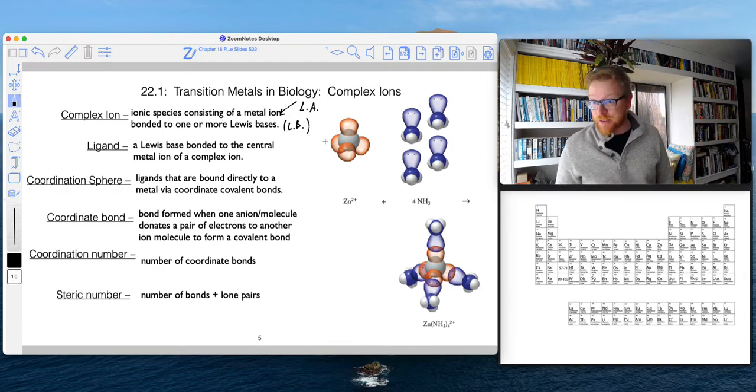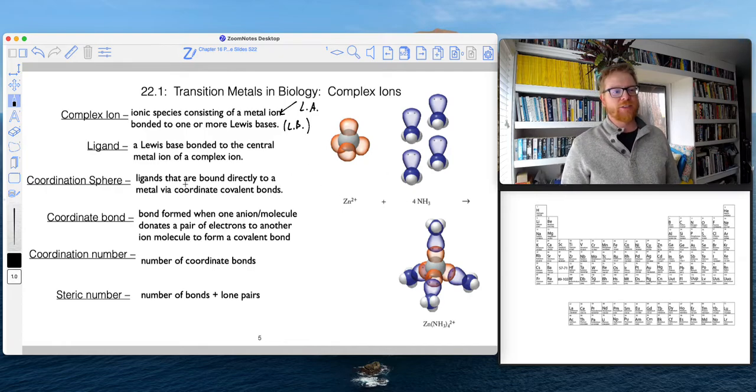That's why we talked about Lewis acids and Lewis bases in the first part of this lecture series. A ligand is a name that we give to a Lewis base bonded to the central metal ion of a complex ion. So these cyanide things are ligands - we would call those the ligands.